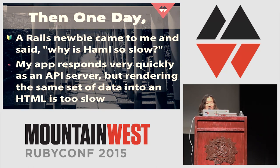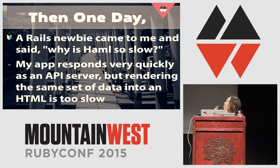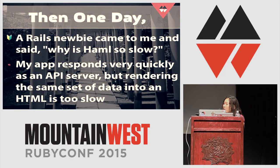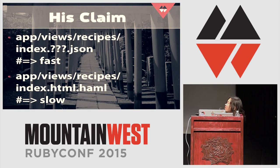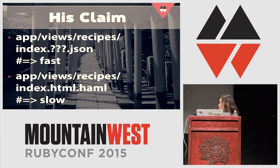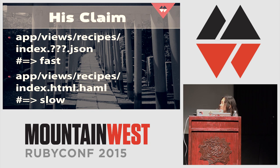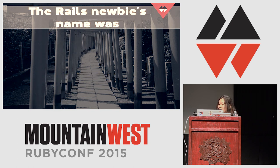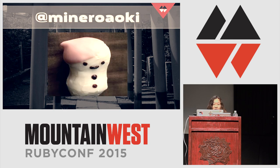One day, a Rails newbie came to me and said, "Haml is slow. Why is Haml so slow?" This is what he experienced: his JSON API works very fast, but with the same data on the same controller, when he rendered Haml, it was very slow. So his assumption was that Haml was slow.